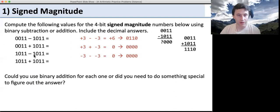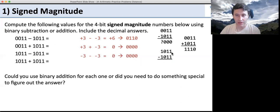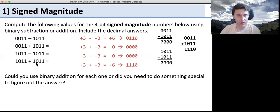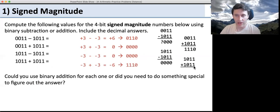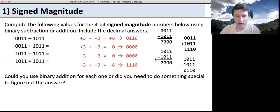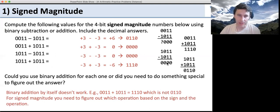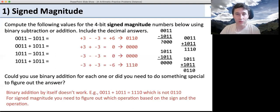For the third example, we have two negative numbers — minus 3 minus negative 3 — which is 0. If we subtract the bits, we do get 0, so that one works out. But the last one — negative 3 plus negative 3 should be negative 6 — and if we add these up, we don't get the right answer. So looking at all of them, we can't use binary addition by itself for signed magnitude. You have to figure out what operation to do based on the sign, and convert things from negative to positive. Signed magnitude is actually a real pain to implement in circuits.